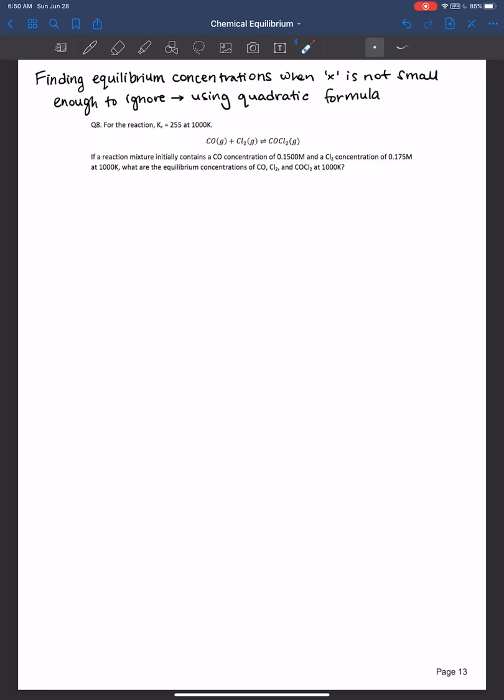So for a reaction we have an equilibrium constant of 255 at a thousand Kelvin for the following reaction. And it says if the reaction mixture initially, always highlight that word, contains a carbon monoxide concentration of 0.15 molar and a chlorine gas concentration of 0.175, what are the equilibrium concentrations of each of the species at equilibrium?